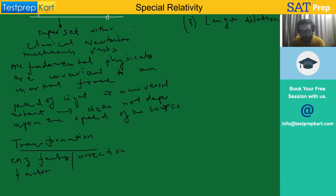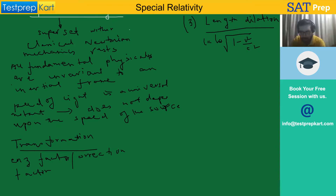In length contraction, L becomes equal to L₀ into under root of 1 minus v squared by c squared. We call this length contraction, where L₀ is the length at a particular inertial frame which is at rest.